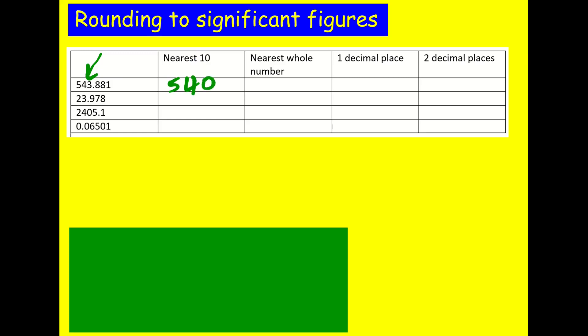I've done that one in some depth. The other ones I'm just going to go through quite quickly. For the next one, the nearest whole number, I'll look at the 3. There's an 8 after it, so I'm going to round that up to 544.